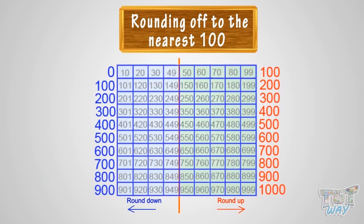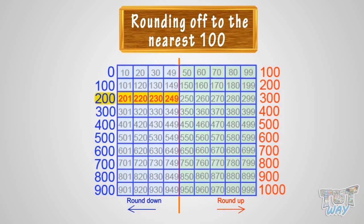See the figure: all the numbers between 0 to 49 are rounded down to 0, and 50 to 99 are rounded up to 100. So kids, we learned that in rounding off to nearest 100, we round it down if it's below or before the 50 mark, and round it up if it's above or after the 50 mark.